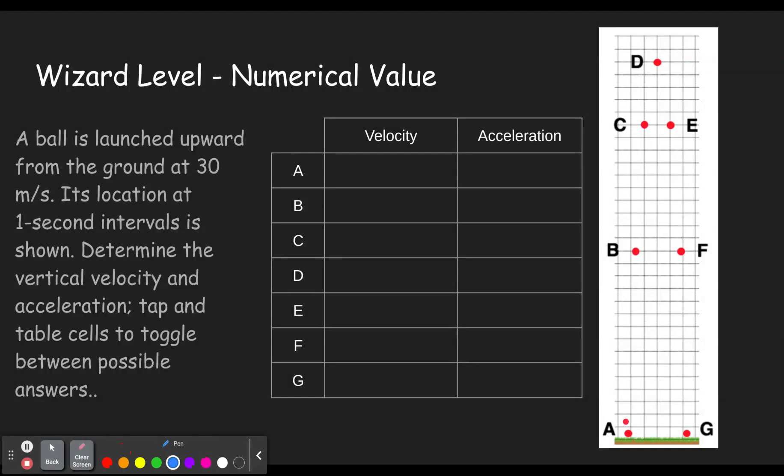So a ball is launched upward from the ground and it gives you a speed. Well, if it's launched at A, we can just write this in for A. Let's use orange. Orange is a fun color. So here it's going to start out going upward at 30 meters per second. Its location at one second intervals is shown. Determine the vertical velocity and acceleration. Tap the table cells, it's probably supposed to say, to toggle between possible answers. So you'll tap on these instead of writing them in. But remember, G is negative 10 meters per second squared. So that's going to go in all of those. So all of those will be negative 10 meters per second squared.